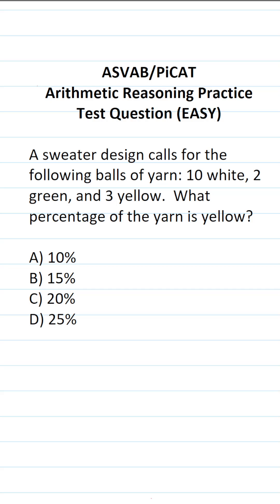This arithmetic reasoning practice test question for the ASVAB asks: a sweater design calls for the following balls of yarn — 10 white, 2 green, and 3 yellow. What percentage of the yarn is yellow?